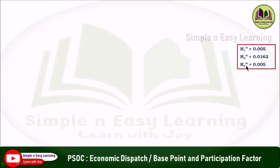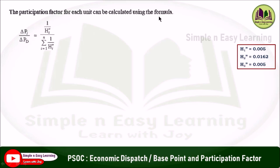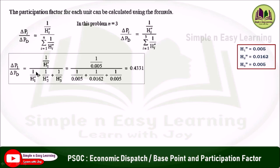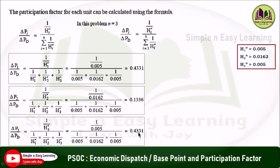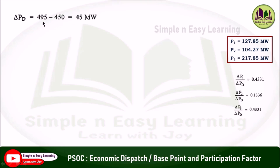Now use these values to find the economic schedule using the base point and participation factor method. The participation factor for each unit is: ΔP_i / ΔP_d = (1/h_i'') / Σ(1/h_i''), where n = 3. Substituting all values: ΔP1/ΔP_d = 0.4331, ΔP2/ΔP_d = 0.1336, ΔP3/ΔP_d = 0.4331. The change in demand ΔP_d = 495 − 450 = 45 megawatt.